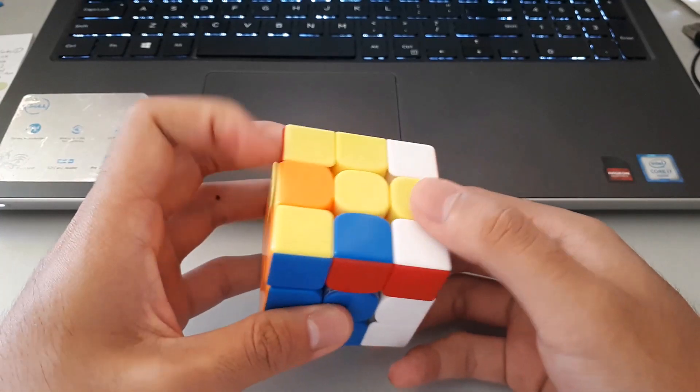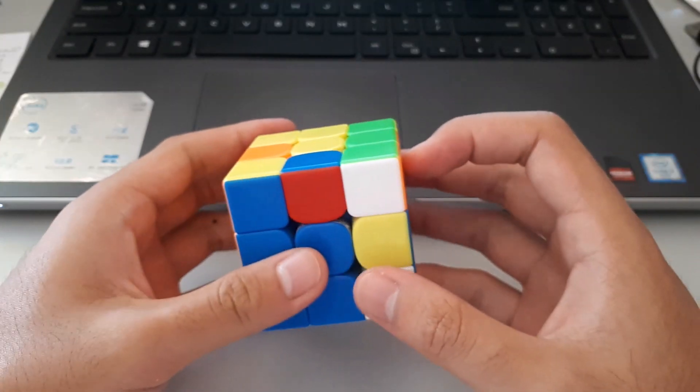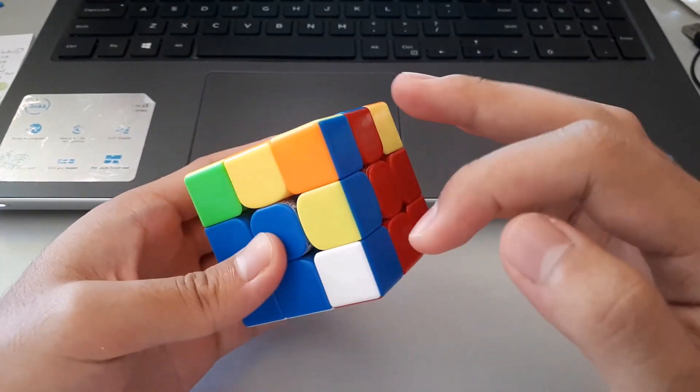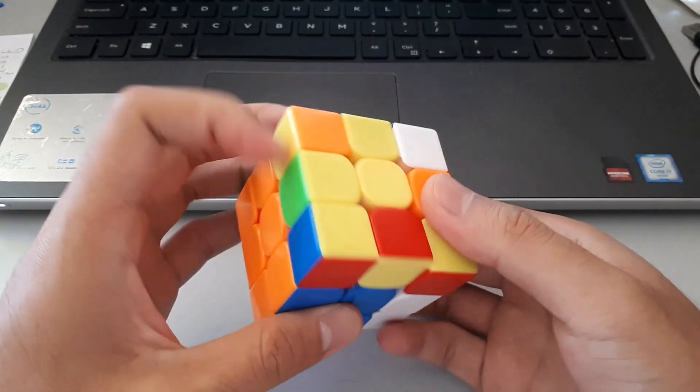So here I could - okay, so I paired these two up, so I'll probably just insert those edges first, and then just go ahead and finish off this F2L pair.